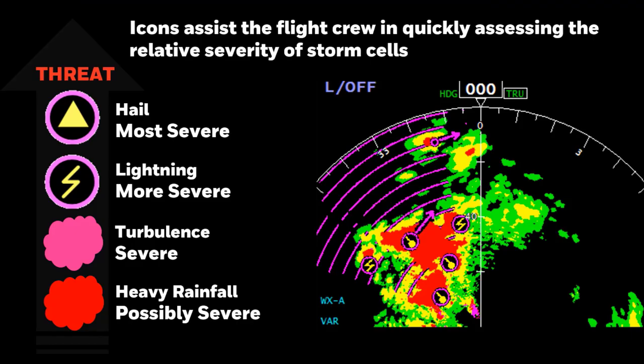The hazard display provides significantly more information to the flight crew on the severity and probability of weather threats. Standard reflectivity is shown by colors calibrated to rainfall rate per FAA requirements, providing a probability of convective turbulence. Red weather is possibly severe, and magenta is definitely severe as it's a direct measurement of turbulence. Areas with attenuation are shown with magenta arcs. Lightning and hail are directly related to threat level, as the vertical growth and profile are analyzed to determine if the cell is dangerous.